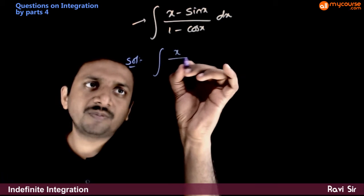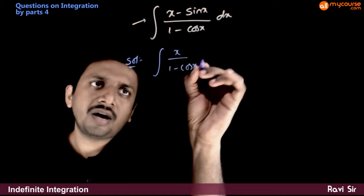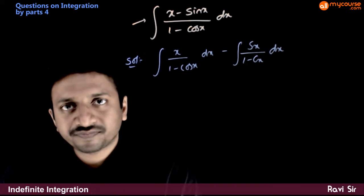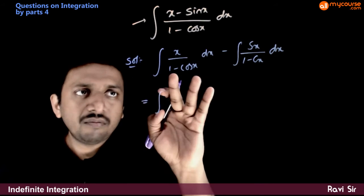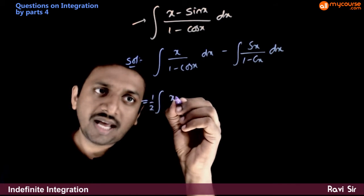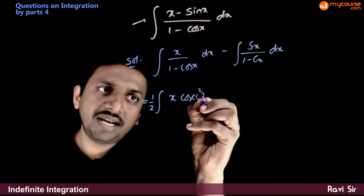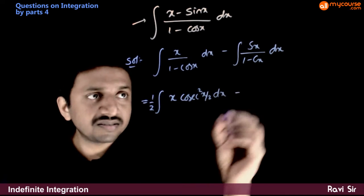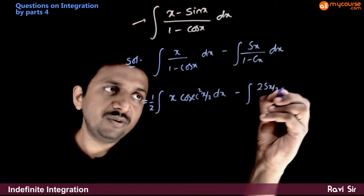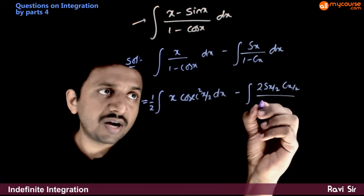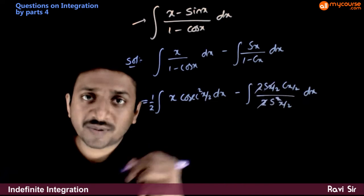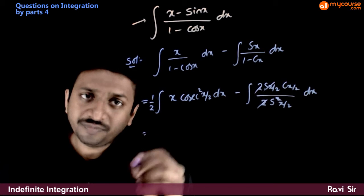So first, I will split this into: integration of x by (1 minus cos x) dx, minus integration of sin x by (1 minus cos x) dx. Now, 1 minus cos x is nothing but 2 sin²(x/2). This can be written as (1/2) times x times cosec²(x/2) dx, minus integration of (2 sin(x/2) cos(x/2)) by (2 sin²(x/2)) dx. Since the 2's and sin(x/2) cancel, that equals half times the remaining terms.